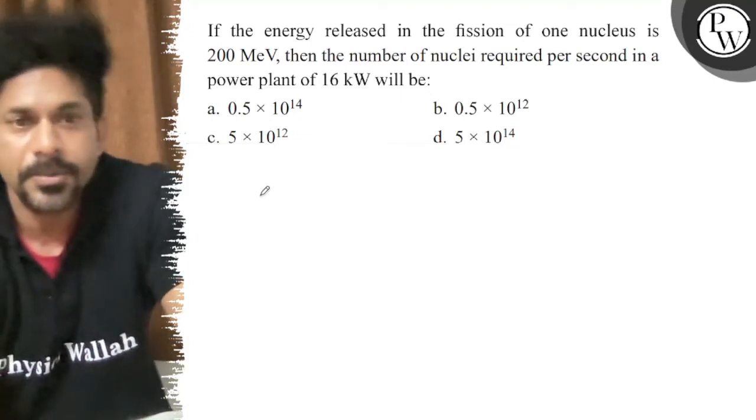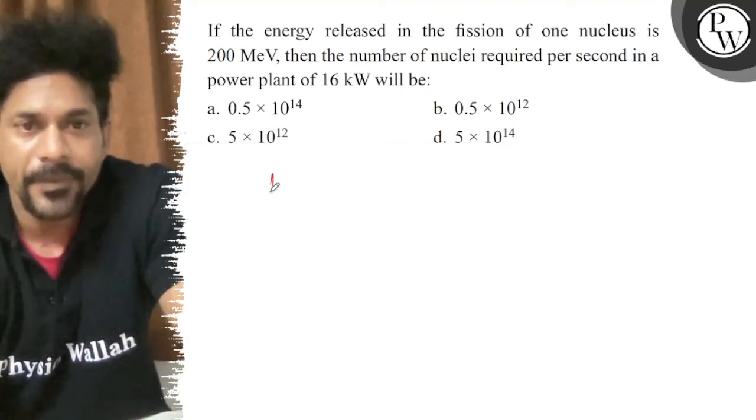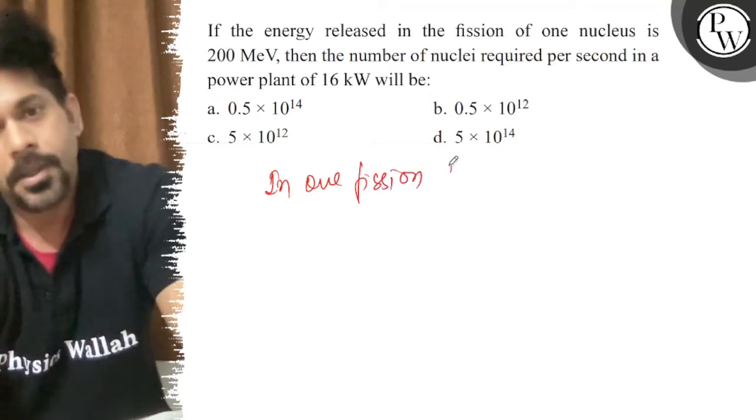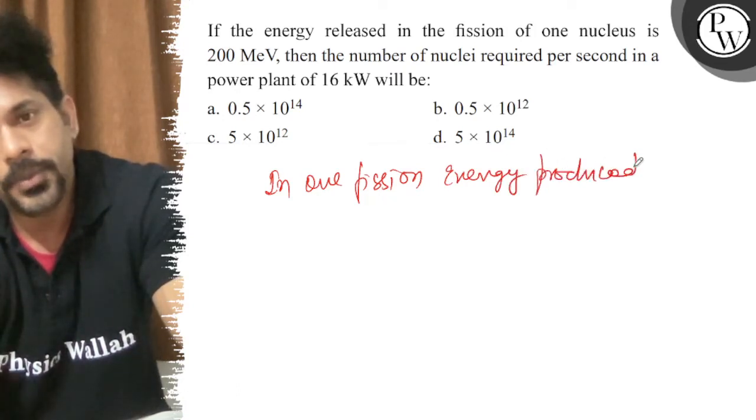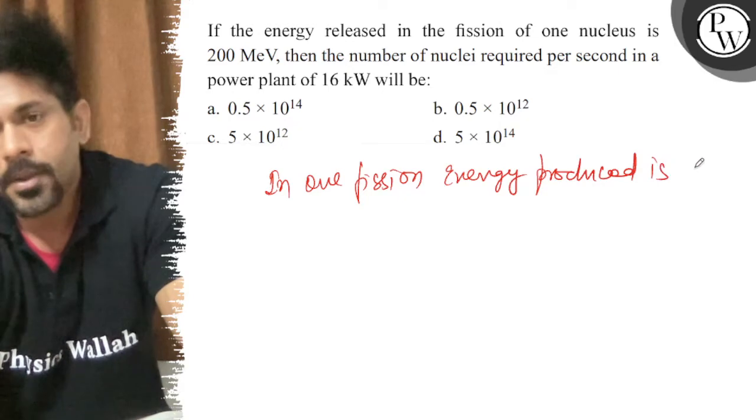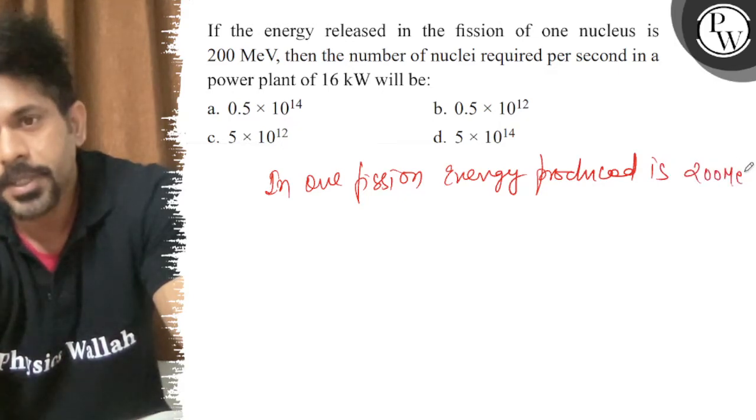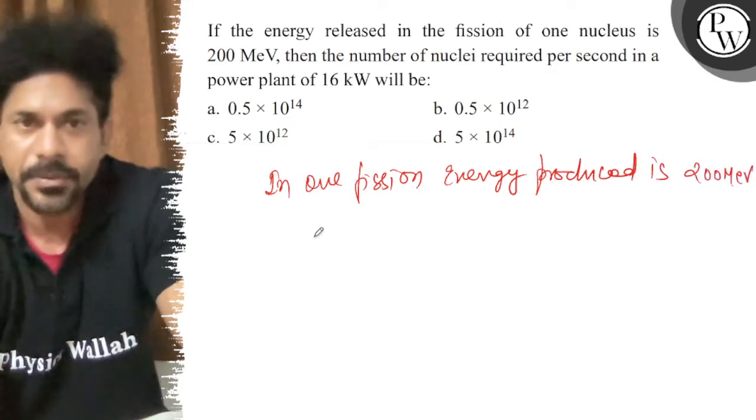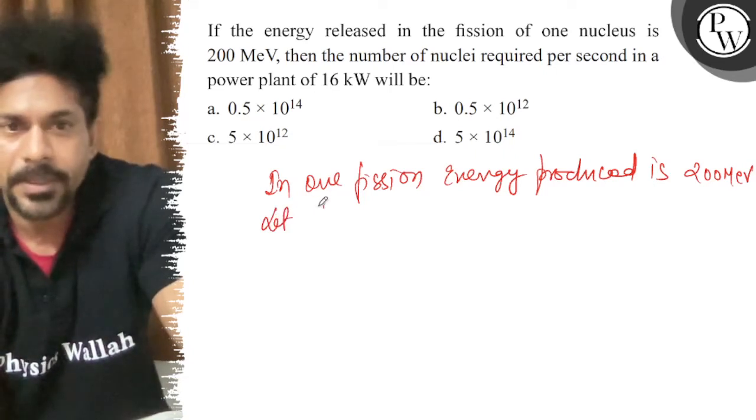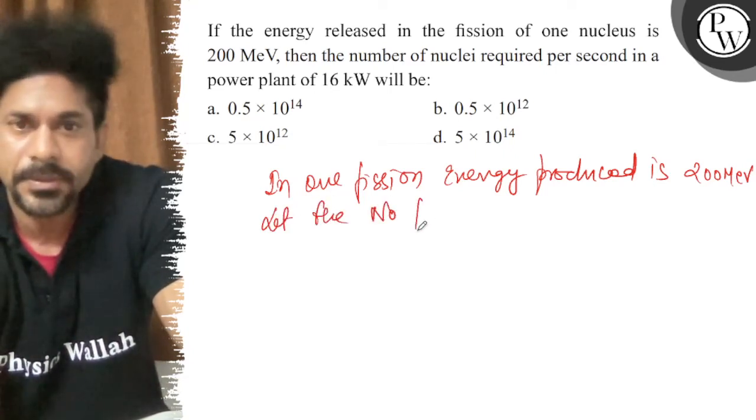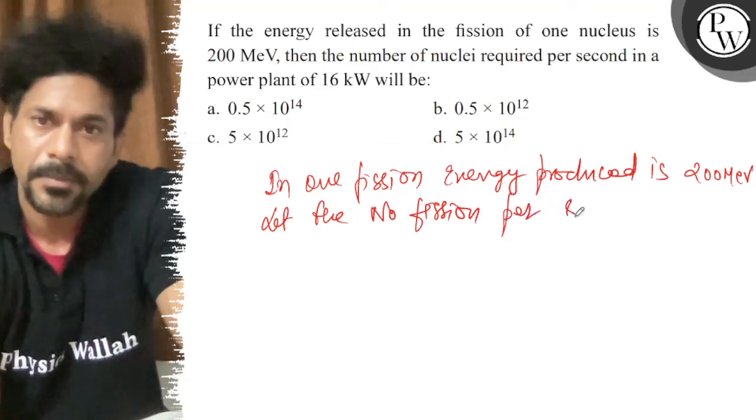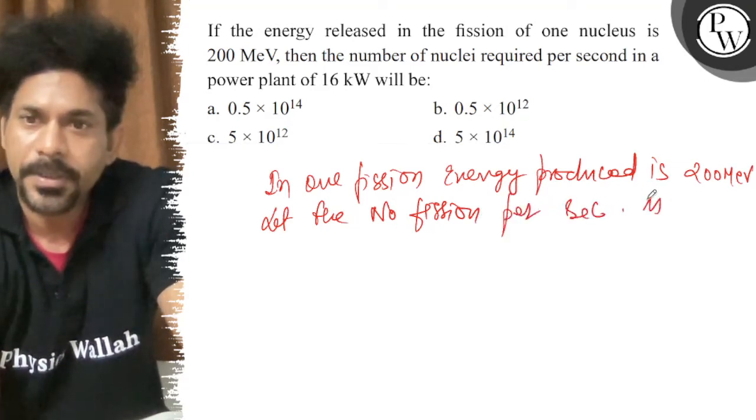So, in one fusion, we are getting energy produced is 200 MeV. In one fusion. So, let the number of fusions per second be small n.